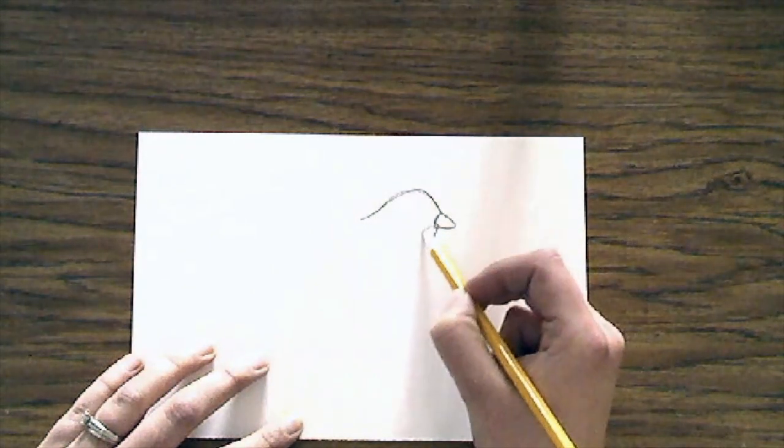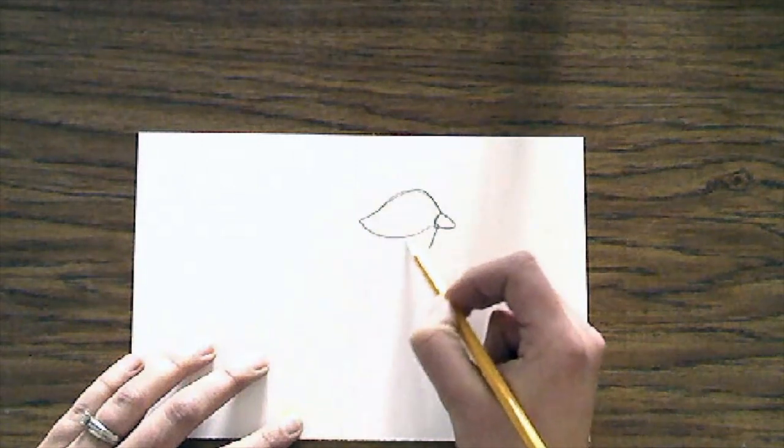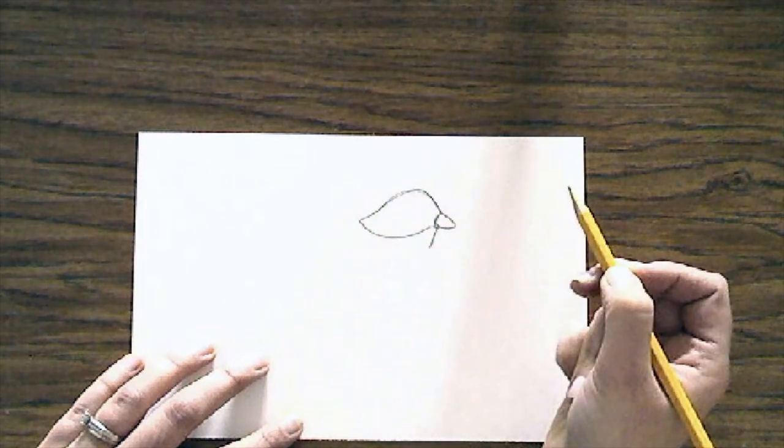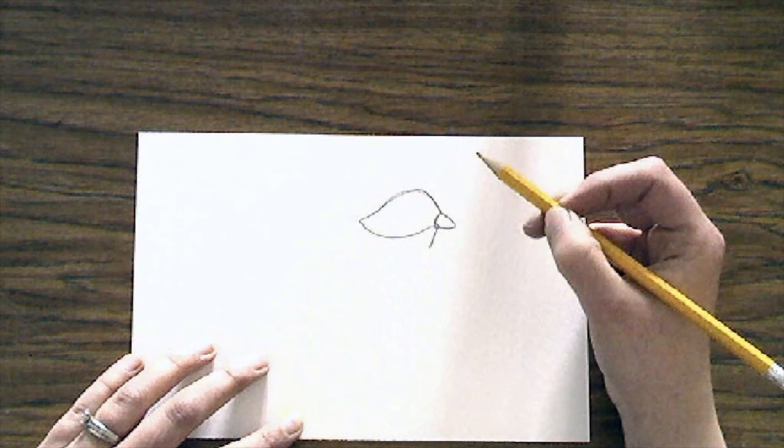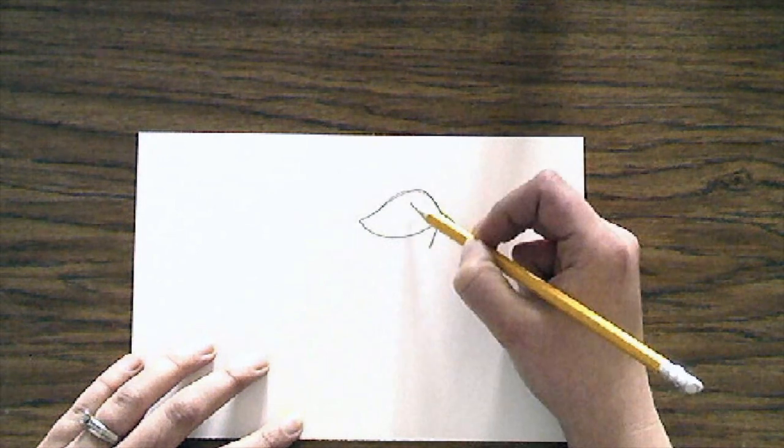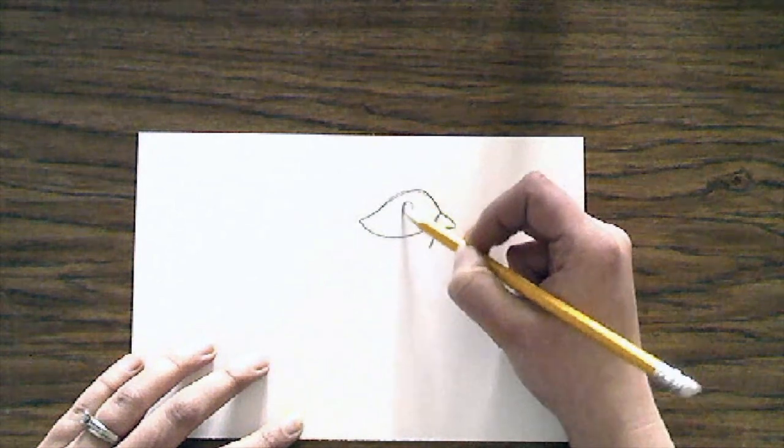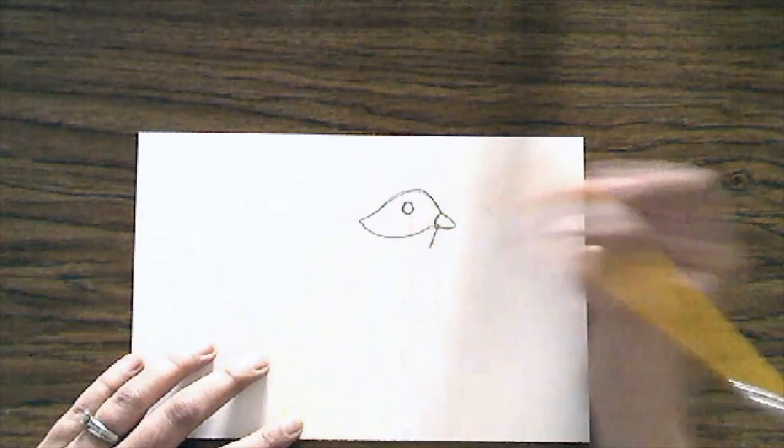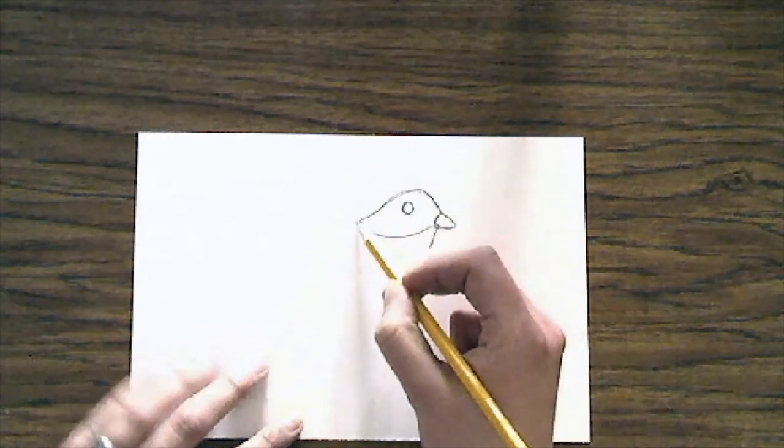Now bluebirds, as we saw, are blue and orange. So we're going to separate the blue part of his head here. We can't forget to add the little eyeball. Remember we're looking sideways at this bird so that means we only see one eye.